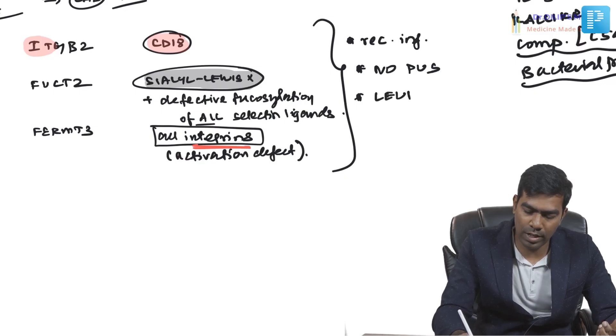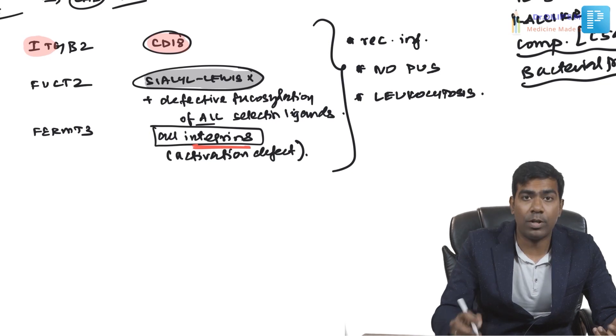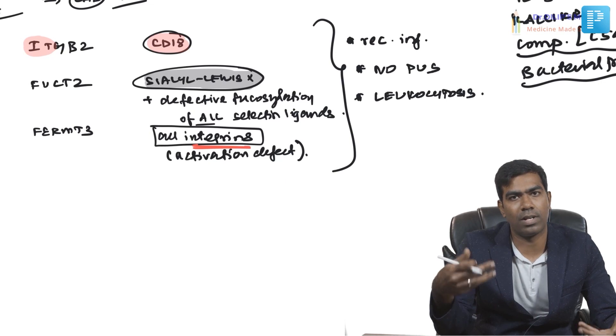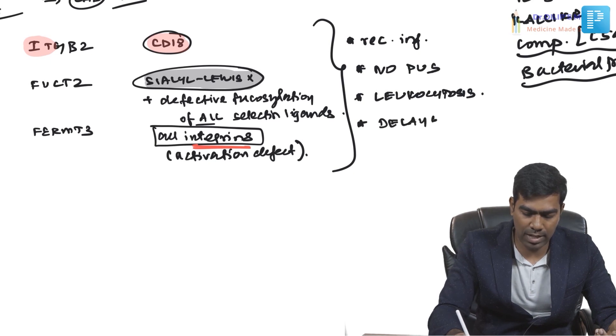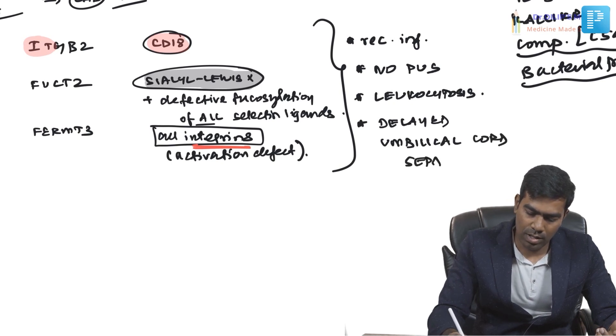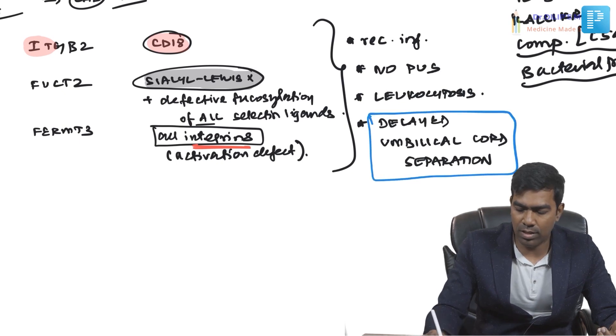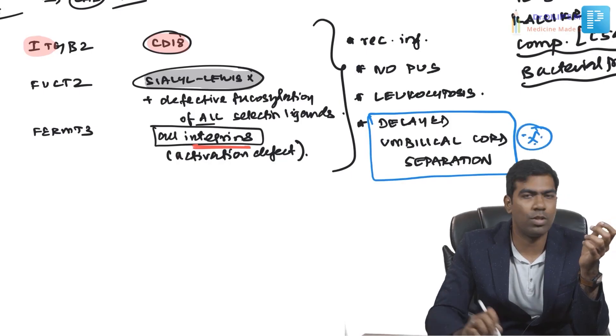Patients will have leukocytosis because neutrophils cannot move and stay within the vascular compartment, making it appear as though there is a high level of neutrophils. A very important exam point is delayed umbilical cord separation, because neutrophils are needed to remove dead tissues and detach the umbilical cord. Since neutrophil migration and chemotaxis are defective, umbilical cord separation is significantly delayed.